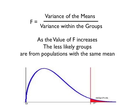F has a probability distribution associated with it. In this graph, we can see that there's a region that if F is large enough, we can be safe in saying that the means of the groups are different rather than being from the same population.